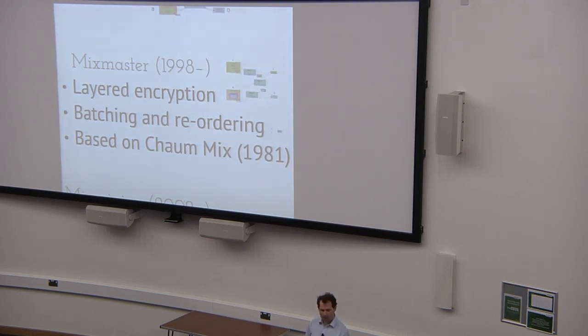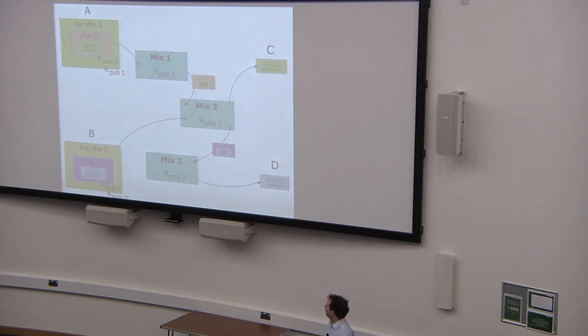MixMaster still exists and rather than just using one layer of encryption, it uses multiple layers. Here's the similar graph here. So Alice is talking to Charlie, Bob is talking to Dave. So Alice takes her message, puts Charlie's address on it and then encrypts it under the public key of Mix3. But now, rather than stopping here, Alice takes this message, puts Mix3's address on here and then encrypts it under the public key of Mix1. So now this message goes to Mix1. One layer of encryption is removed and then Mix1 will discover that the next address is going to be for Mix3. And then this goes on to Mix3 and then Mix3 is able to see that this message, it should go on to Charlie. And so the message goes on to Charlie.